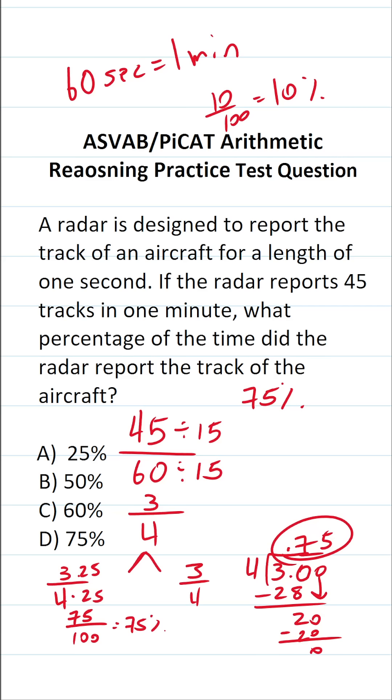So again, you should know that 3 fourths is the same thing as 75%. If you didn't, you can either rewrite it with a denominator of 100 or you can do the long division. Either way, you get the answer D 75%.